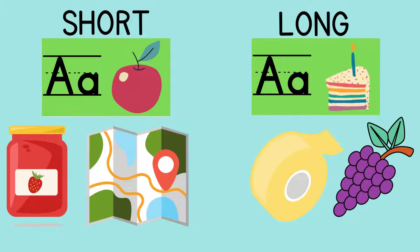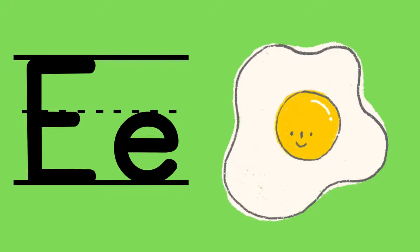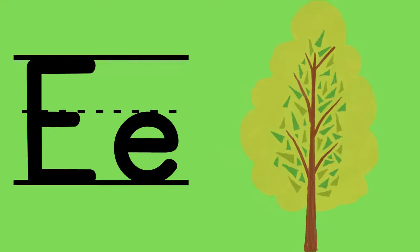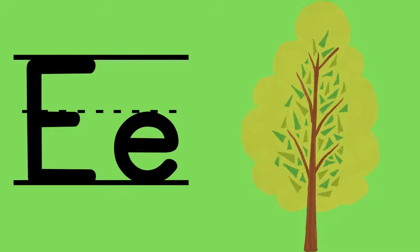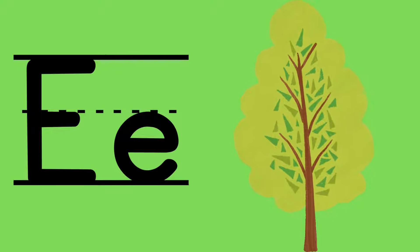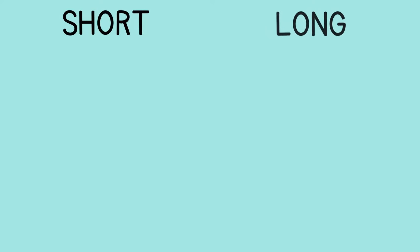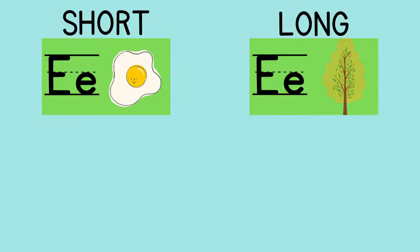Let's take a look at our next vowel, E. E's short sound is 'e' as in egg. E's long sound is 'ē' as in tree. It's saying its name, just like A did. Let's sort them by short and long vowel.